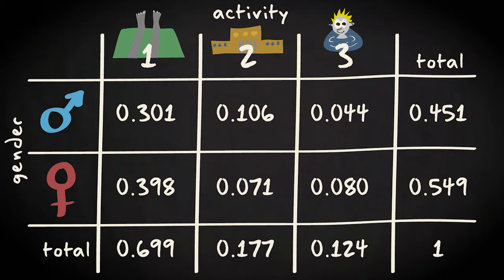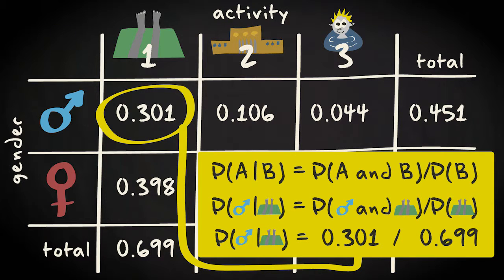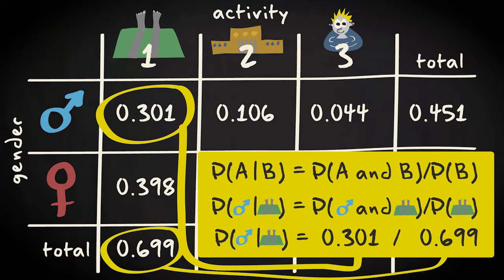What you should do here is to consider a joint probability, for example the case of being male and resting, and then divide this joint probability by the marginal probability for the relevant activity, in this case resting.